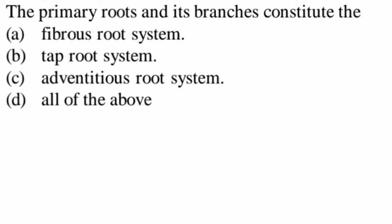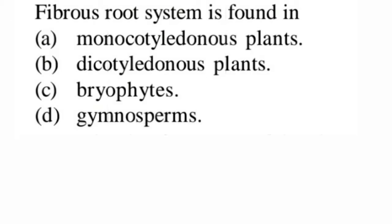Next question: the primary root and its branches constitute which root system? We know the primary root has branches — secondary, tertiary, etc. The primary root and its branches constitute the tap root system, as seen in dicots like Brassica and mustard plants. So option B, tap root system, is correct.